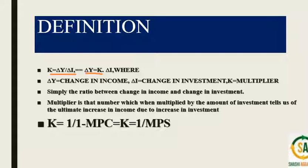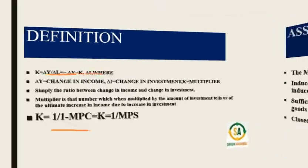The multiplier is the ratio between the change in income due to change in investment. It is the number which, when multiplied by the amount of investment, tells us the ultimate increase in income. The multiplier equals 1 divided by (1 minus MPC), and K is the reciprocal of the marginal propensity to save. The higher the MPC, the higher the multiplier; the higher the MPS, the lower the multiplier.